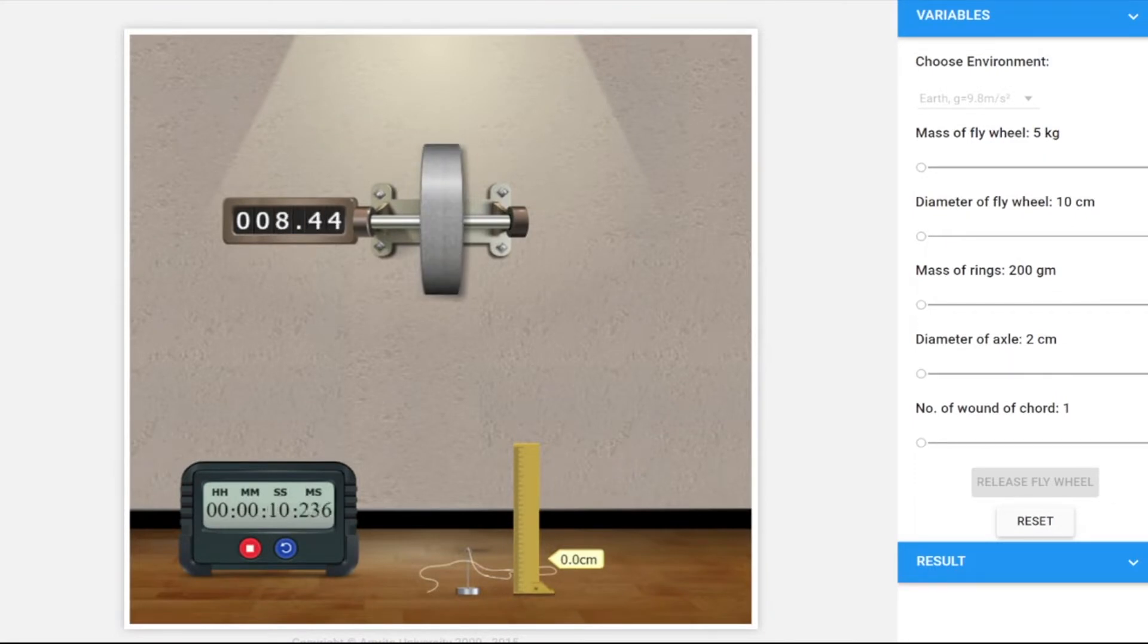When we release the flywheel, the mass will apply a torque to the flywheel. This flywheel will rotate and we need to find the number of revolutions it makes and note down the time after which it stops. Let's wait for it to stop first. It has stopped finally.